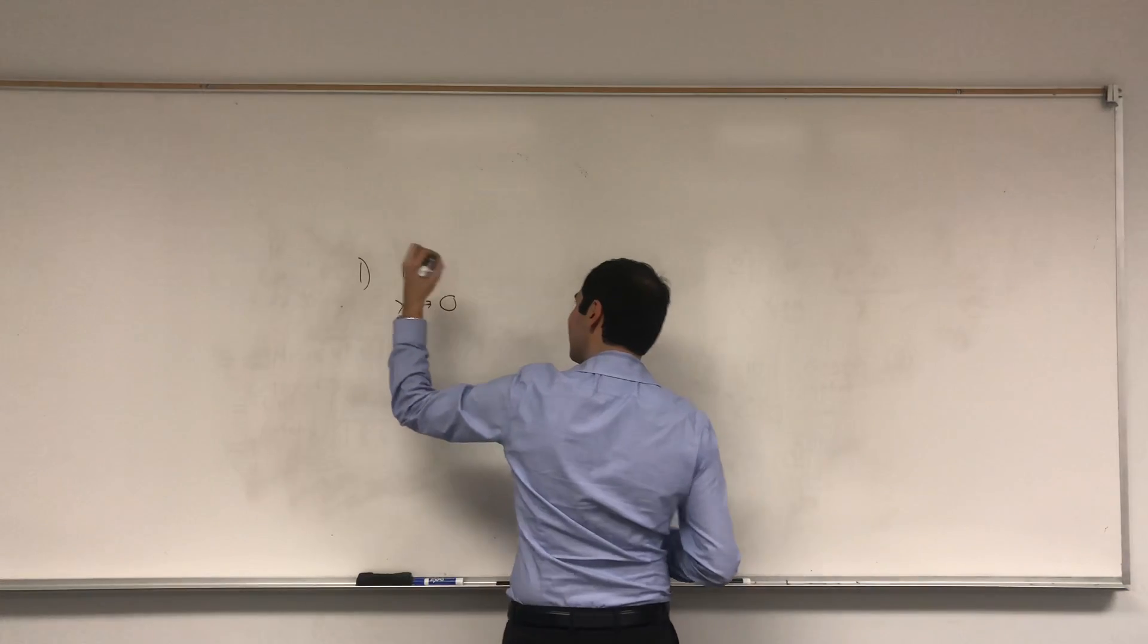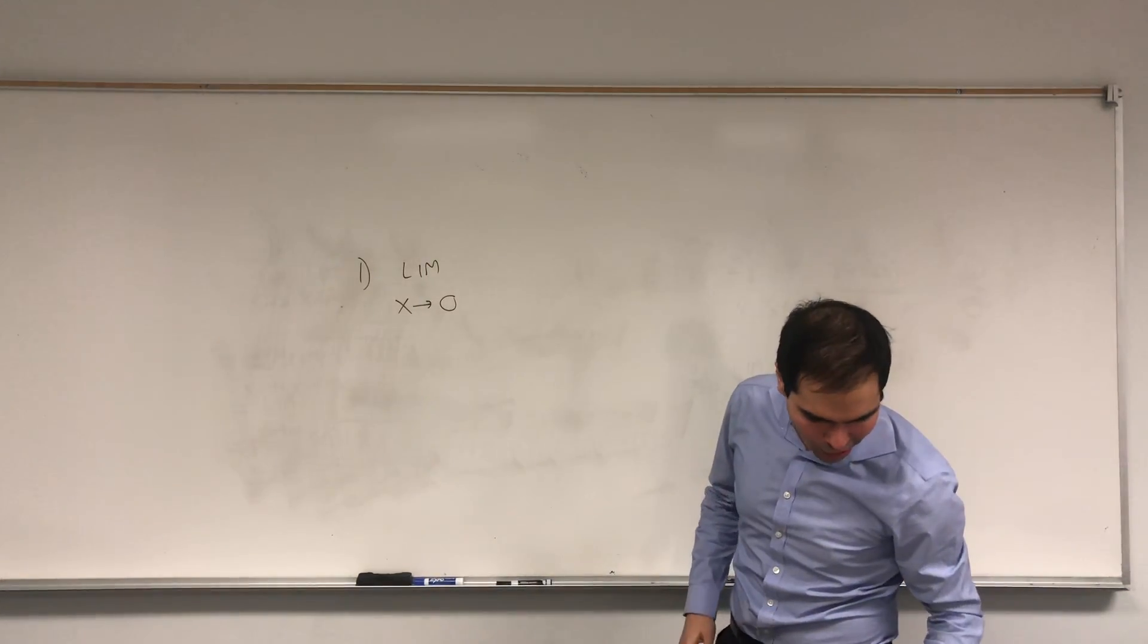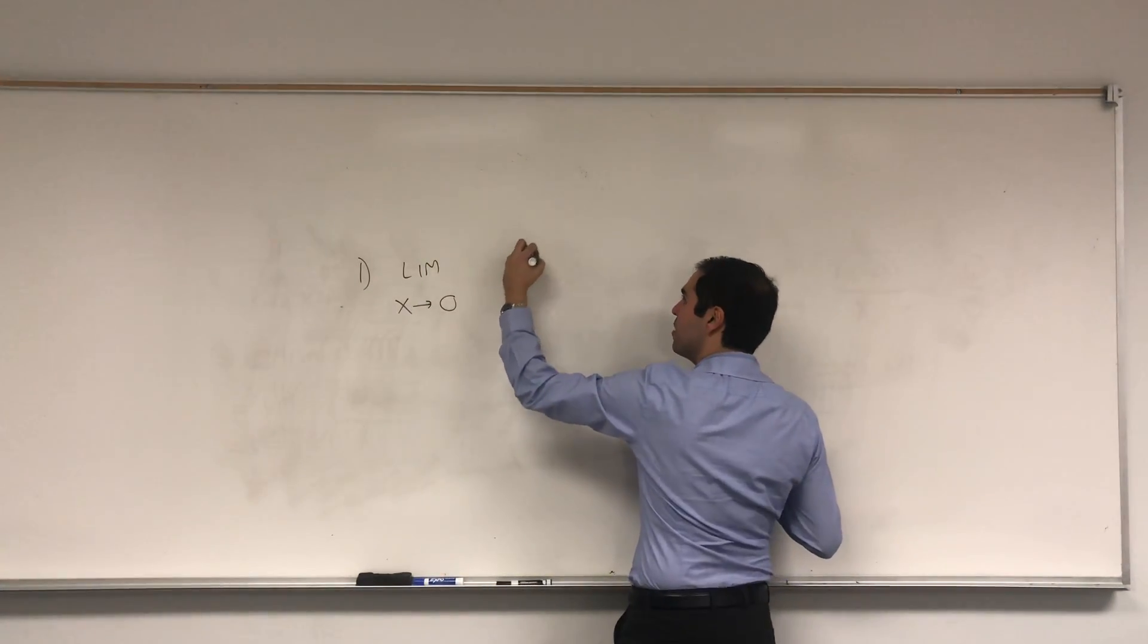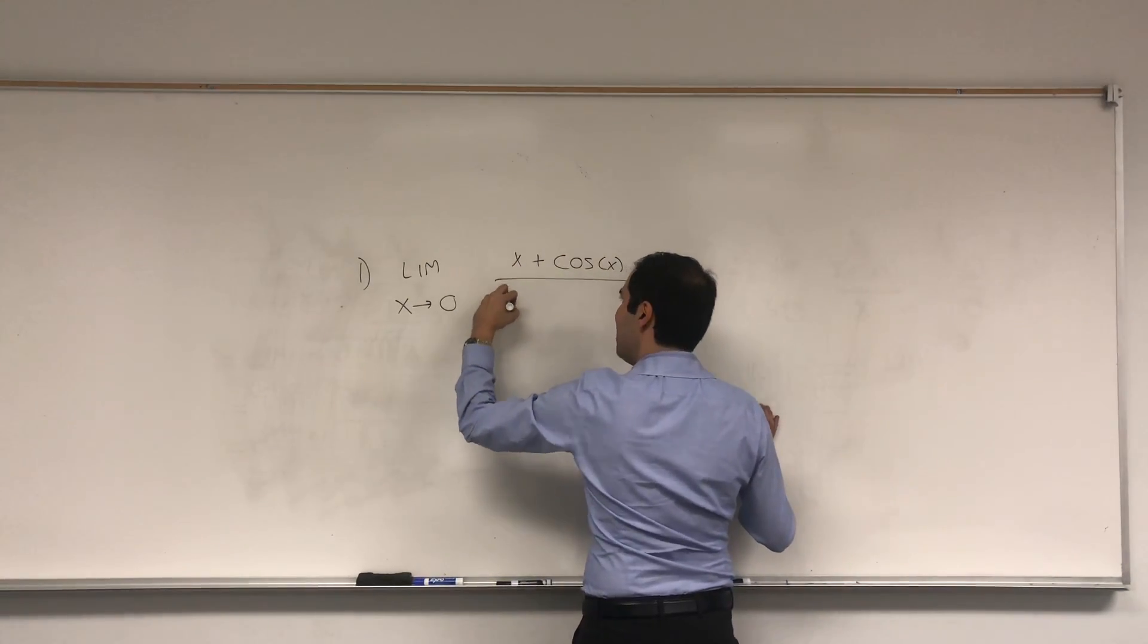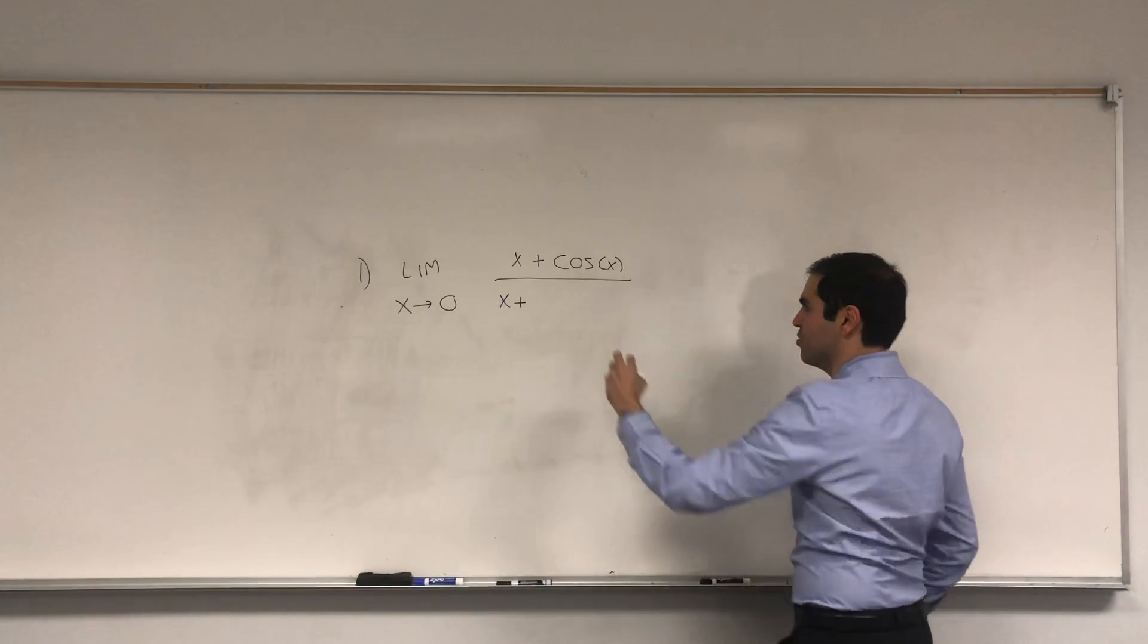For instance, let's calculate the limit as x goes to 0 of x plus cosine of x over x plus sine of x plus 1.